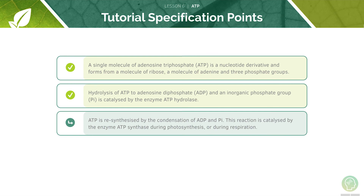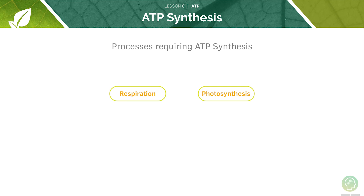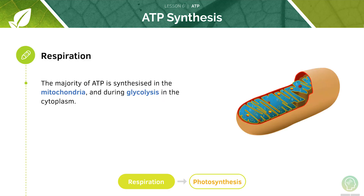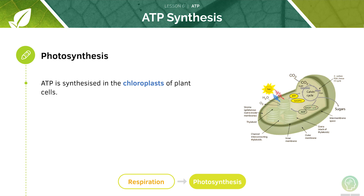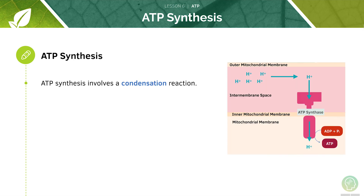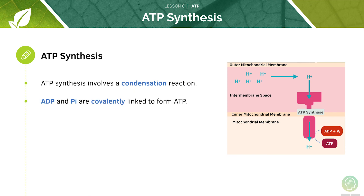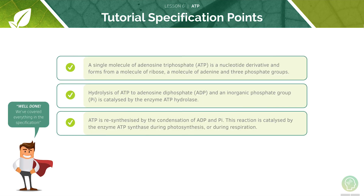ATP is synthesized during respiration and photosynthesis. The majority of ATP in an organism is synthesized during respiration in the mitochondria, and during a process called glycolysis in the cytoplasm. In plants, ATP is also synthesized during photosynthesis in the chloroplasts. ATP synthesis involves a condensation reaction, in which ADP and Pi are re-linked covalently to form ATP. The enzyme ATP synthase catalyses this reaction.